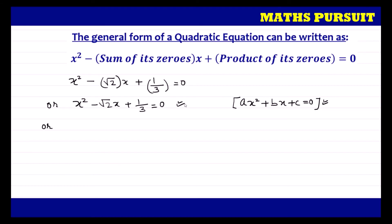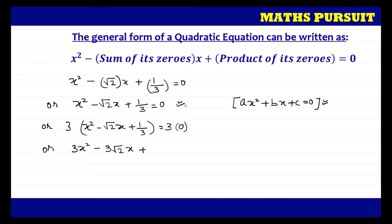There is a 3 in the denominator that we need to remove. To do that, multiply both the left-hand side and the right-hand side of the equation by 3. This gives: 3x squared minus 3 root 2 x plus 3 upon 3 equals 0, which simplifies to 3x squared minus 3 root 2 x plus 1 equals 0.